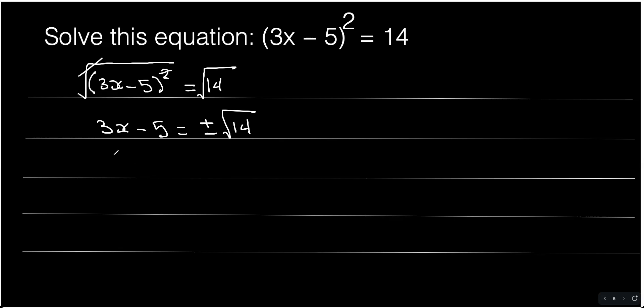Now let's move the negative 5 to the other side. When we move it over, it becomes positive 5 plus or minus square root of 14.